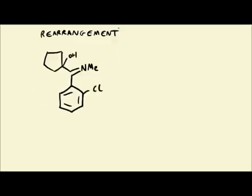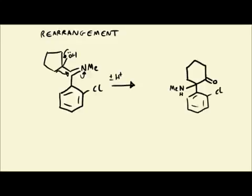The final step is a rearrangement process. The oxygen electrons push down, forming a double bond and causing one of the ring bonds to migrate, sliding across and reducing the imine to an amine as it accepts the electrons. There's an internal proton transfer involved.